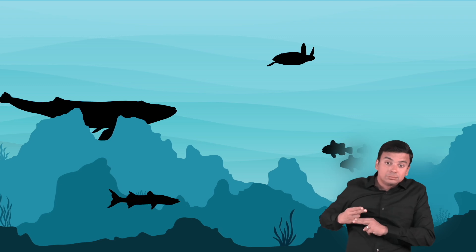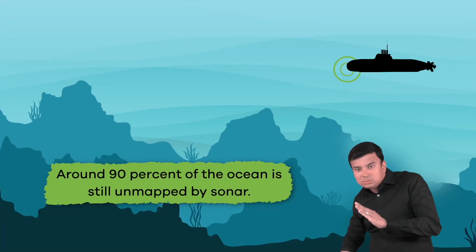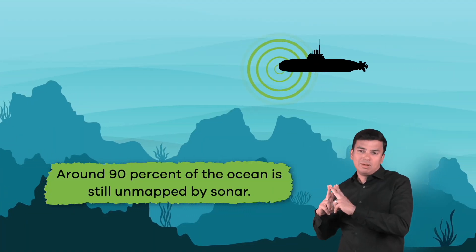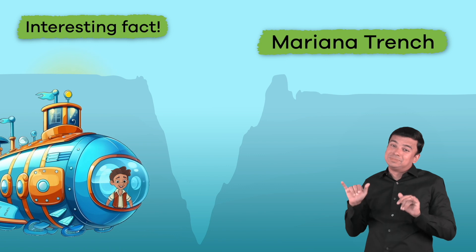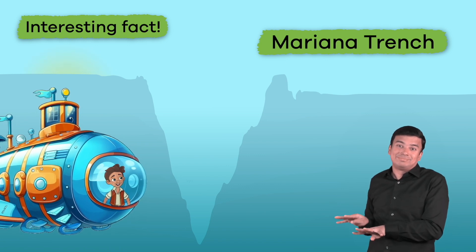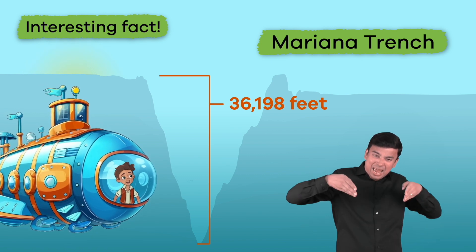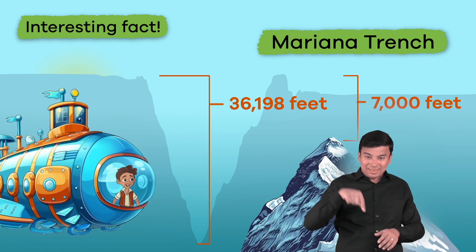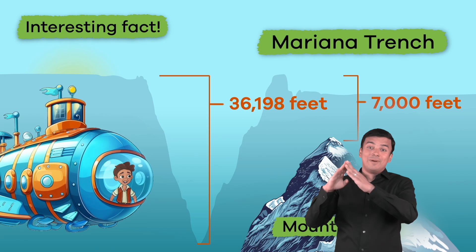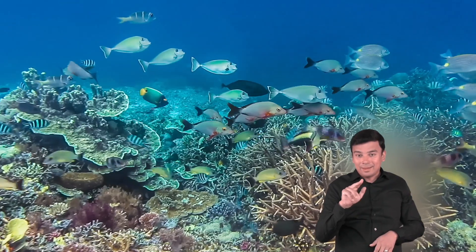There are even mountain ranges and volcanoes under the ocean. Even with all of our technology, around 90% of the ocean is still unmapped by sonar. Here is an interesting fact: the Mariana Trench is a deep underwater crack in the ocean floor. It is 36,198 feet deep, which, if it were a mountain, would be around 7,000 feet taller than Mount Everest.